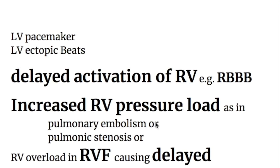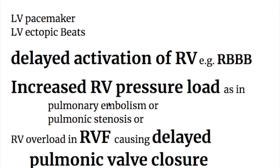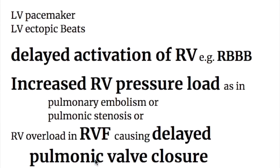The left ventricular causes of S2 split are LV pacemaker and LV ectopic beats. Right ventricular causes include: delayed activation of the right ventricle, as in right bundle branch block, where the right ventricle is activated slowly; and increased right ventricular pressure load, occurring in pulmonary embolism, pulmonic stenosis, or RV overload — including right ventricular failure — causing delayed pulmonic valve closure.